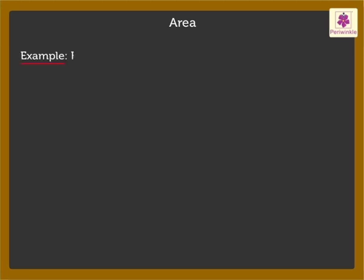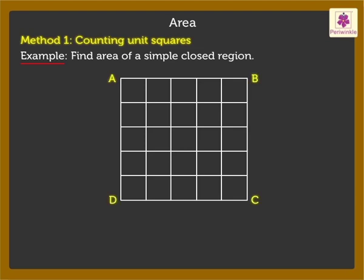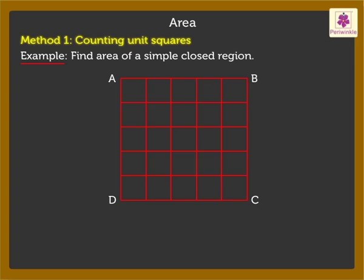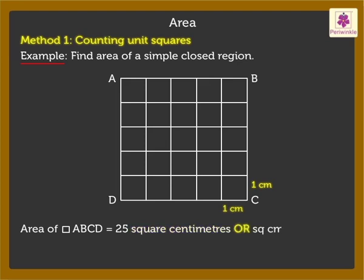First, let's see how to find the area of a simple closed region by counting unit squares. When the region is divided into unit squares, look at square ABCD — it is divided into 25 equal squares of side 1 centimetre each. Thus we say that the area of square ABCD is equal to 25 square centimetres, which can also be written as sq cm in short.